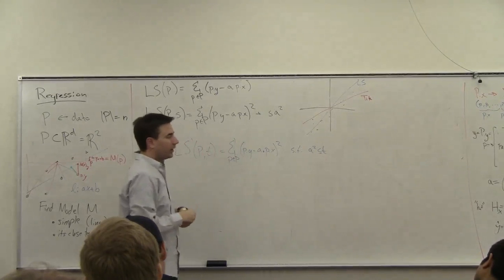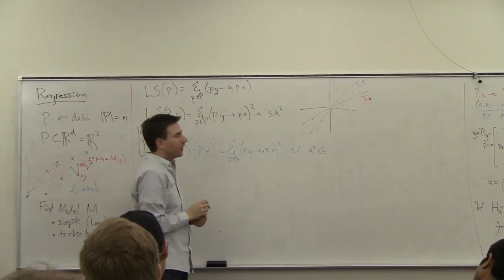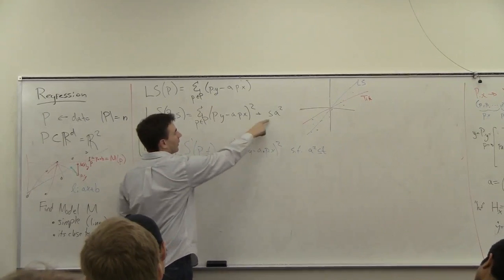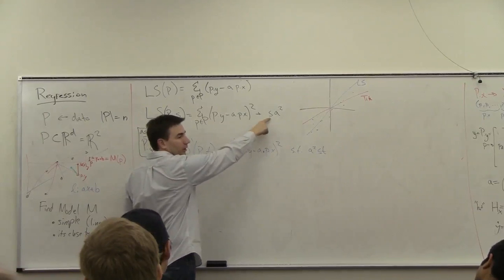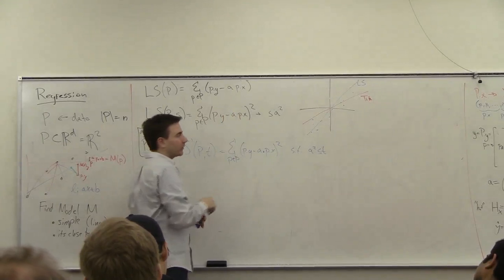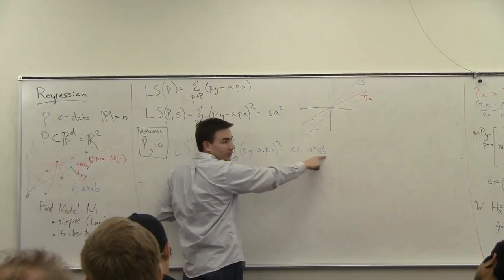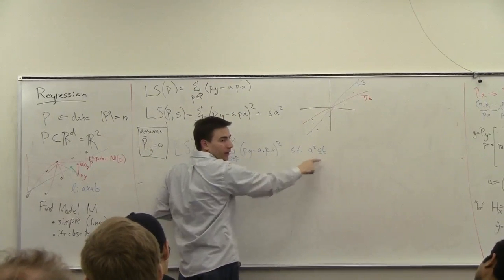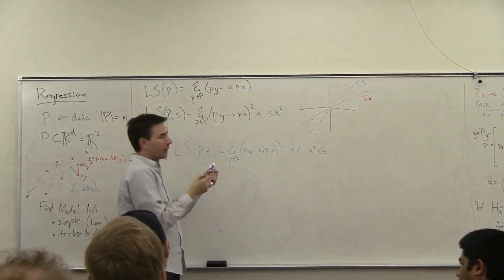So these two turn out to be equivalent because if you make s larger, this is going to force the slope to be even smaller. And so if you make s larger, you can make t smaller.